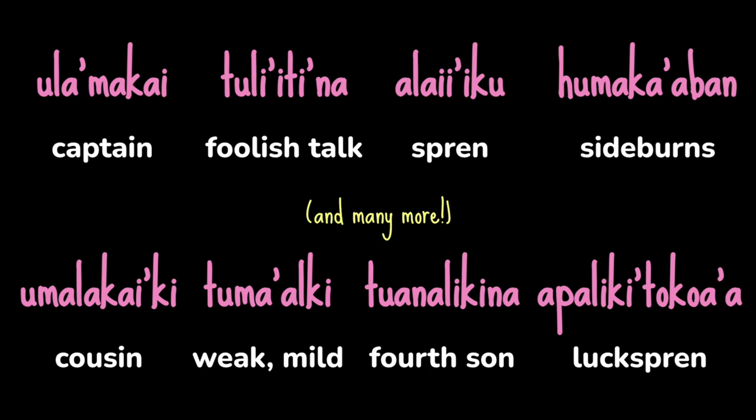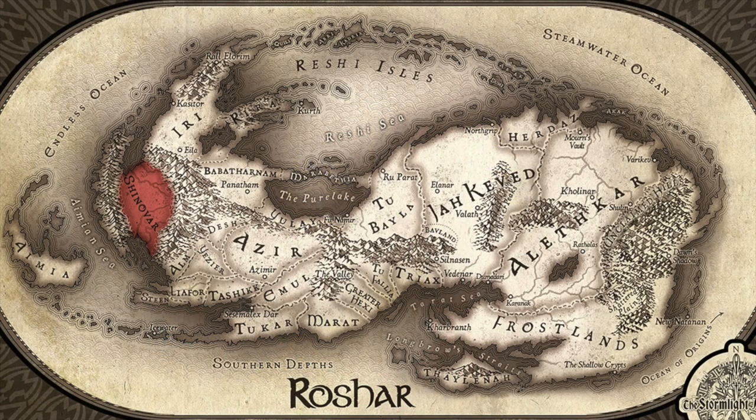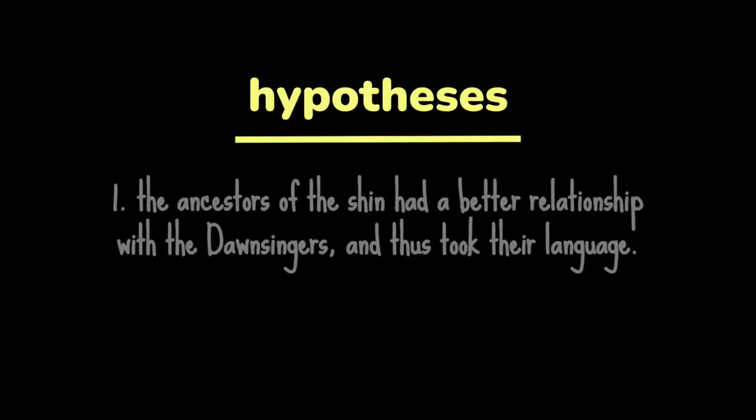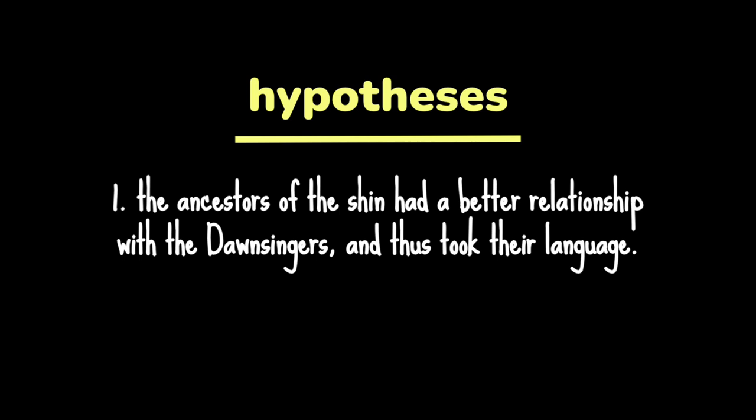We know why Unkalaki and Parshendi share a common ancestor in Dawnchat, but the third and final surviving language in the family raises many questions — for it is Shin, confirmed by Brandon Sanderson. Shin is the language spoken by the human inhabitants of Shinovar, the original refuge for humans on Roshar, the origin point from which humanity spread. So why would the Shin language have evolved from Dawnchat, when the Shin people likely would have had the least contact with the Dawnsingers? A few hypotheses are worth considering. The first is that the modern Shin descend from the humans who stayed in Shinovar and didn't migrate to the rest of the continent and break the deal humanity had with the Dawnsingers. The ancestors of the Shin probably would have had a better relationship with the Dawnsingers than the other humans, maybe even good enough to want to take the Dawnchat language as their own.